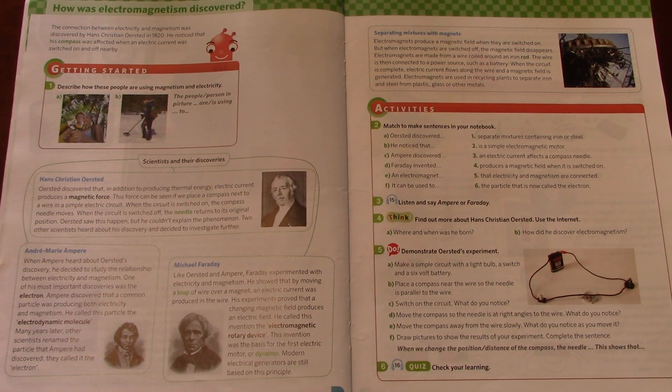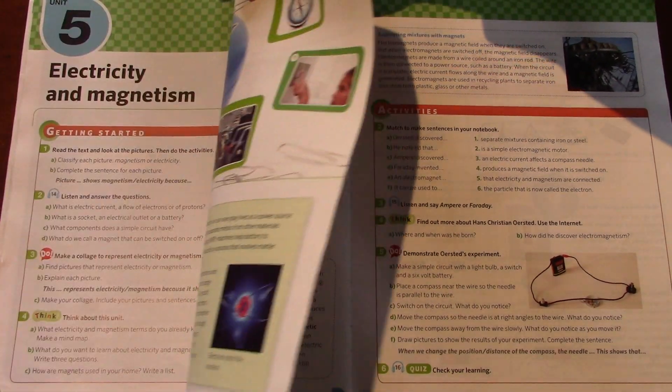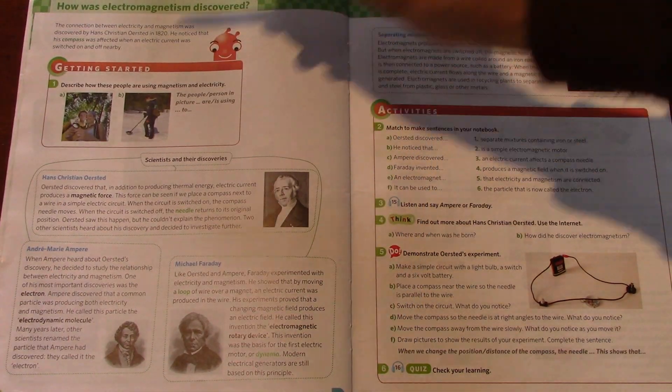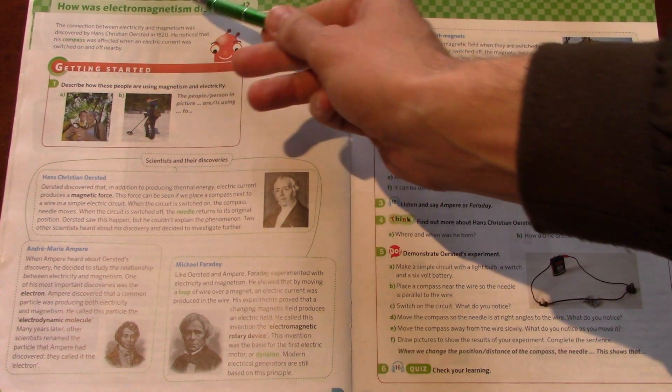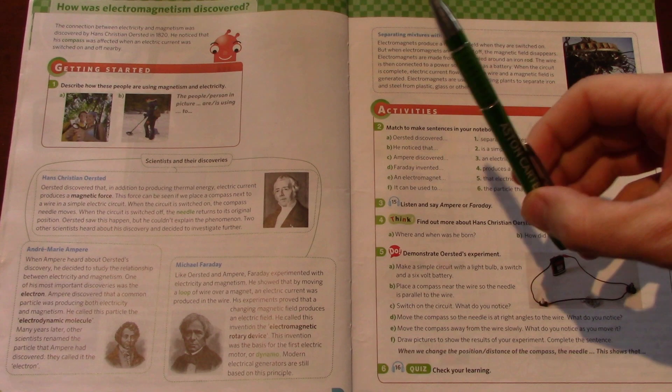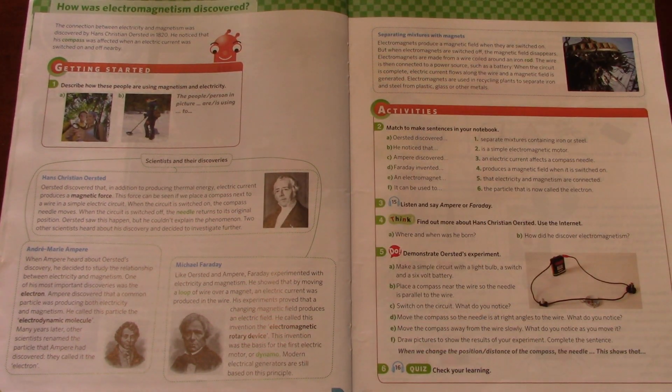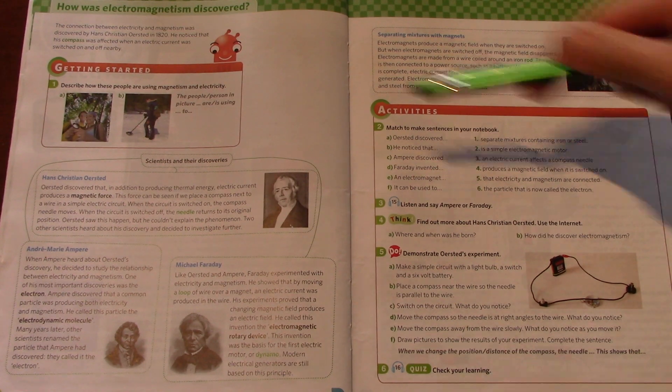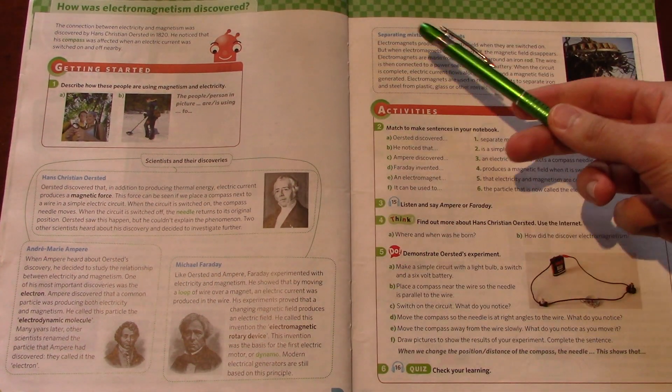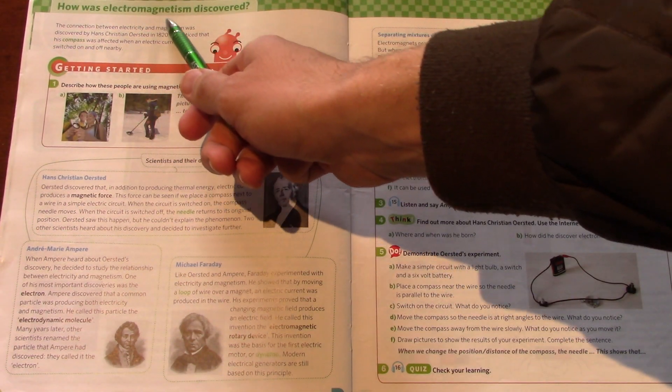Good morning class. Today we will be looking at pages 22 and 23 of unit 5. How was electromagnetism discovered? So what we will do is I'm going to read and try to explain these pages, and I also want you to practice reading these pages out loud at home to practice your pronunciation. So, how was electromagnetism discovered?